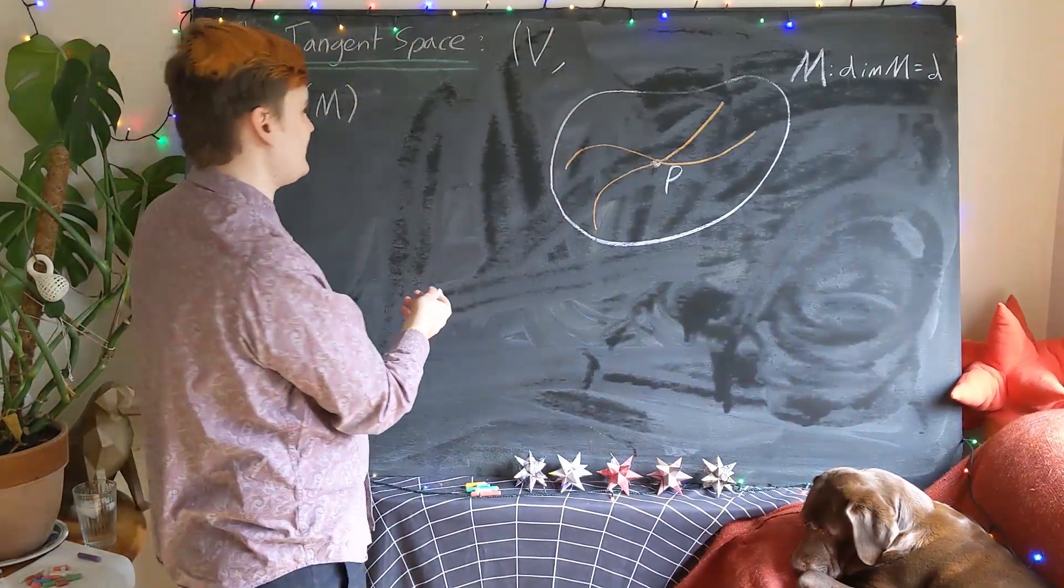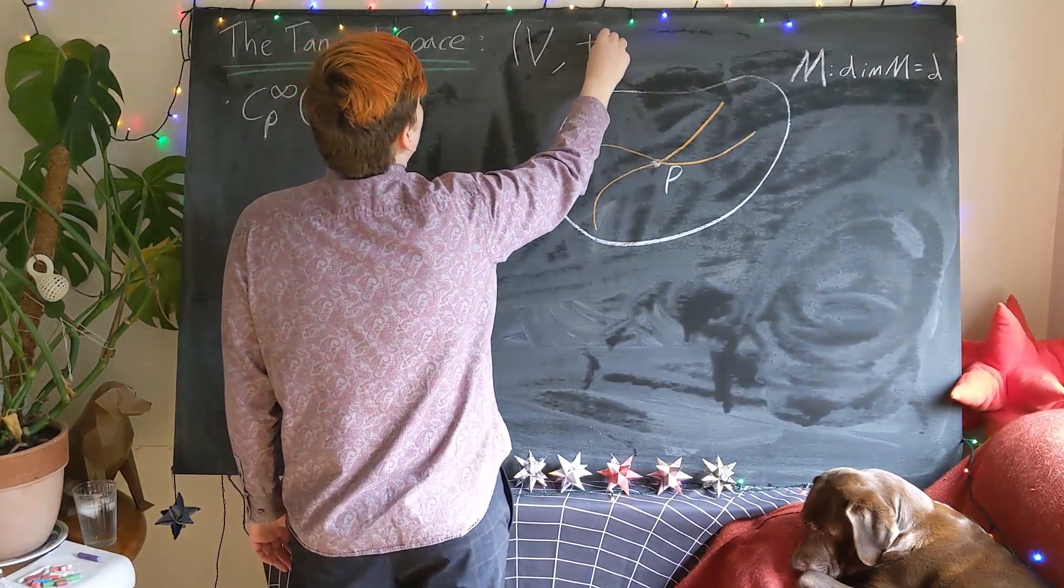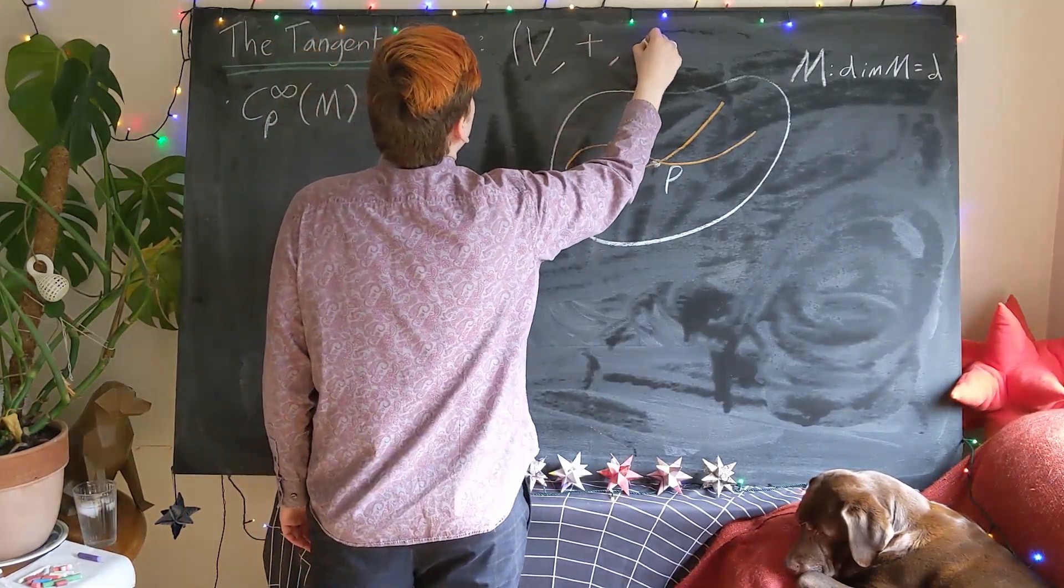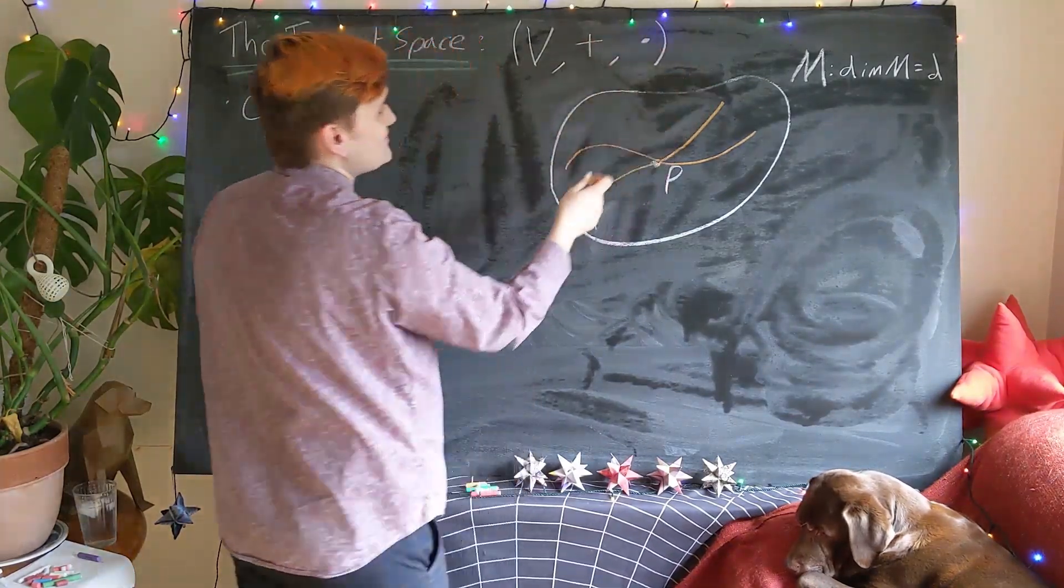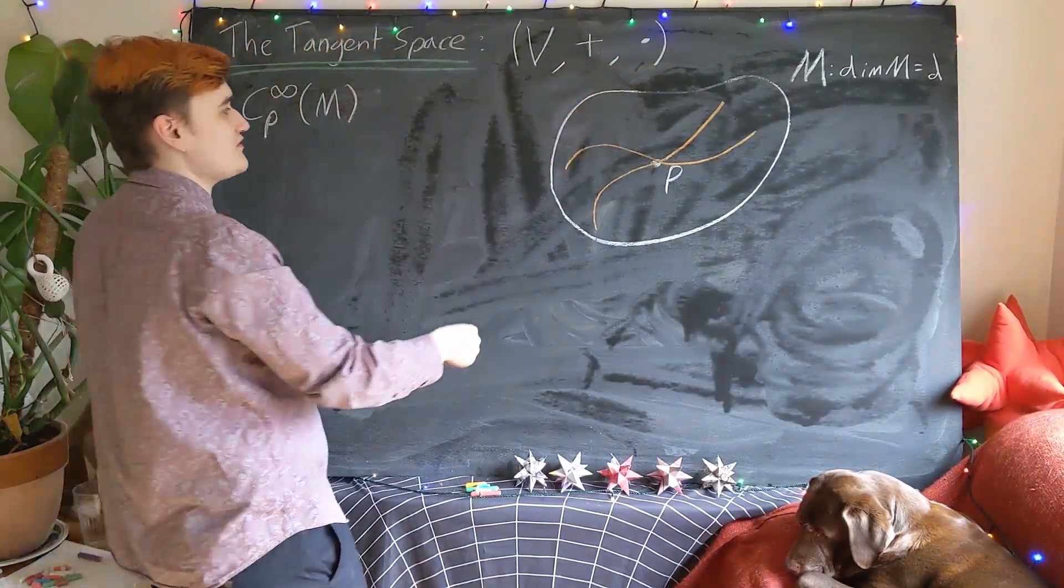you'll recall that we mean some kind of set, we usually want to call it V. So it's just a set of elements, but we can show that that set of elements has two particular operations, the vector addition and scalar multiplication.